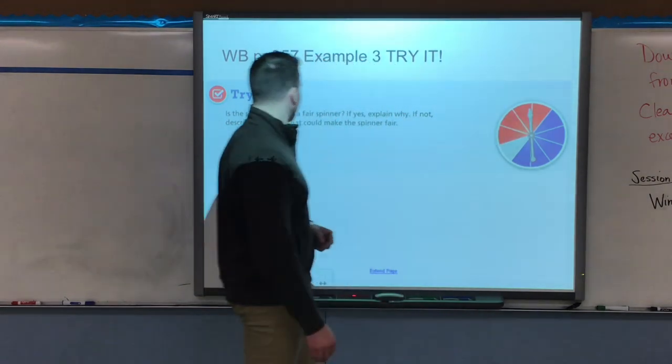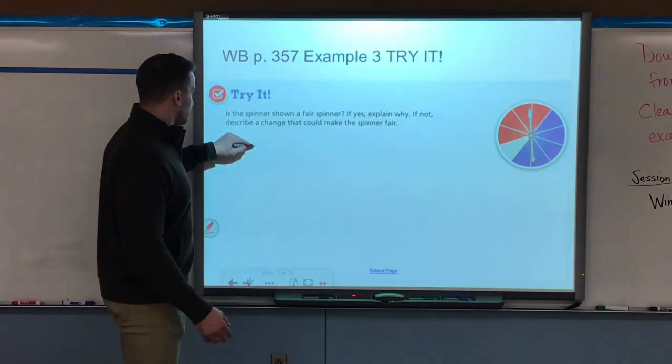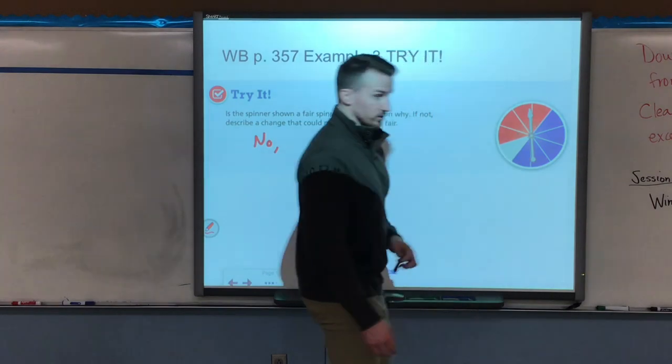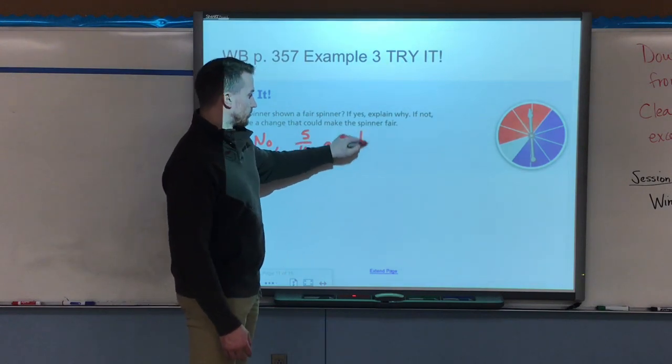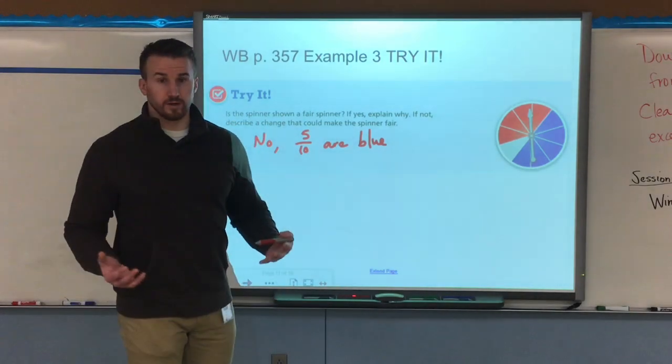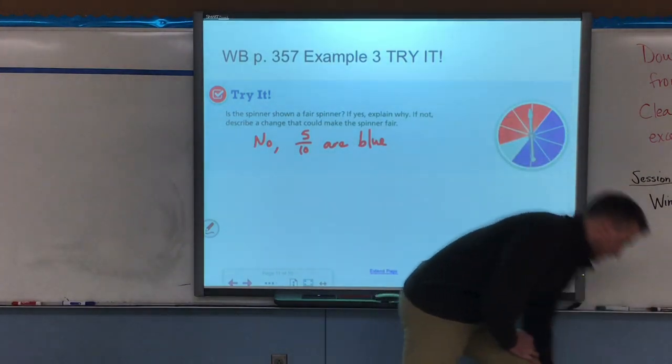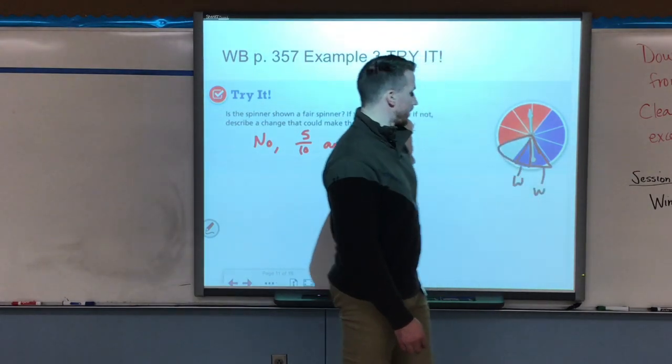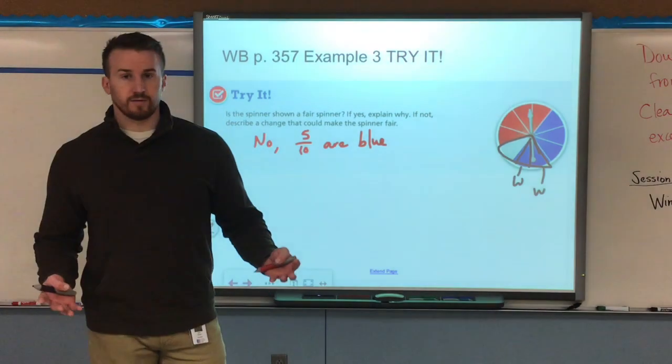Example three, here we have a spinner that's got three colors: red, blue, and white. They want to know is this spinner a fair spinner? Well clearly it's not. We would say no because if I look I have one, two, three, four, five, six, seven, eight, nine, ten sections, five of which are blue. So five out of ten are blue which is one half. It says describe a change that could make the spinner fair. Well we need all of them to be the same amount, so I need at least a couple more of these to be white. If I took away two blue and made these two white, that would be equal to blue, but now red has four.